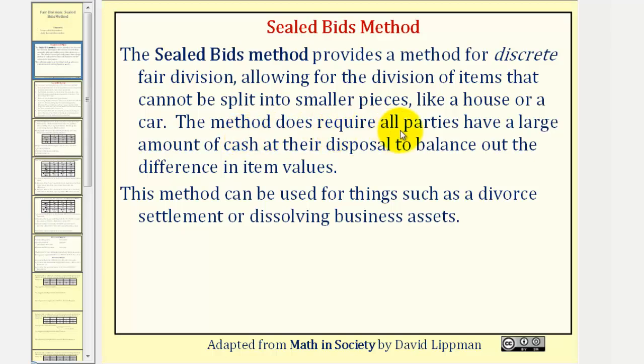The method does require all parties have a large amount of cash at their disposal to balance out the difference in item values. This method can be used for things such as a divorce settlement or dissolving business assets.